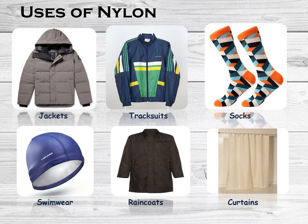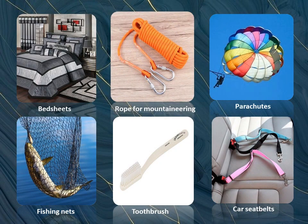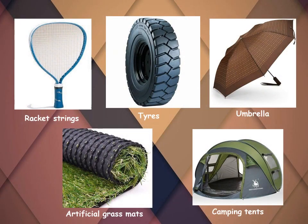Nylon is a very significant synthetic fiber used for producing various articles in day-to-day life, such as jackets, tracksuits, socks, swimwear, raincoats, and curtains. Other uses include bed sheets, ropes for mountaineering, parachutes, fishing nets, toothbrushes, and car seat belts. Nylon is also used in racket strings, tires, umbrellas, artificial grass mats, and camping tents.